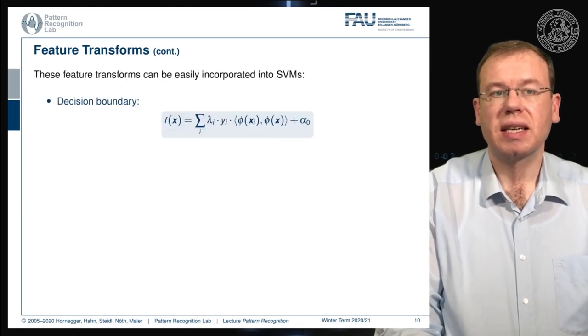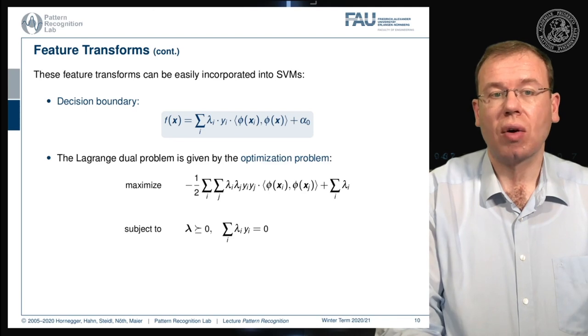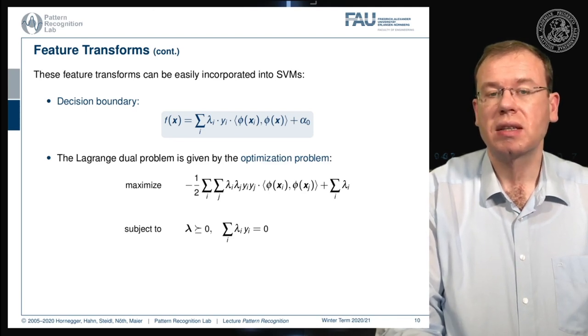This then also means that they can very easily be incorporated into our support vector machine. The decision boundary is then given as the feature transformed vectors using the inner product and also the optimization problem can be rewritten with this inner product.